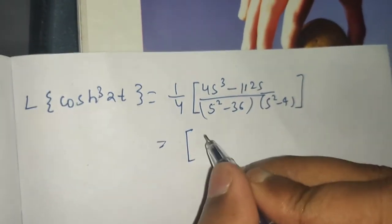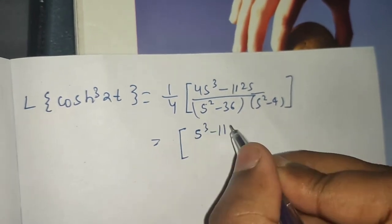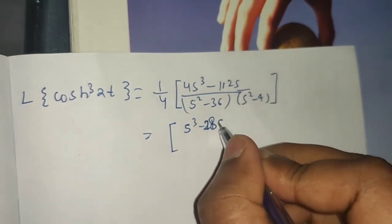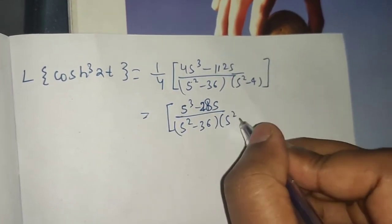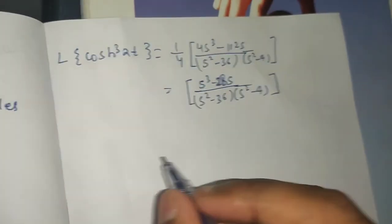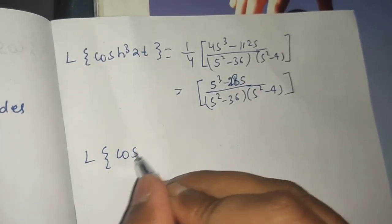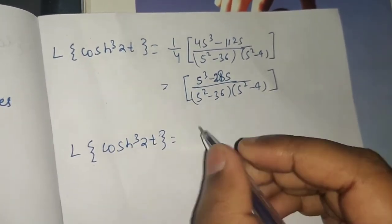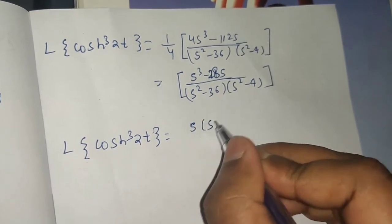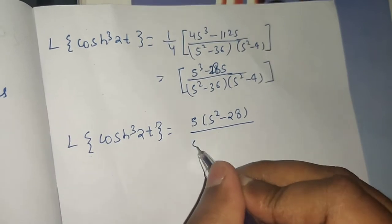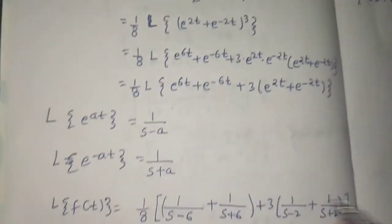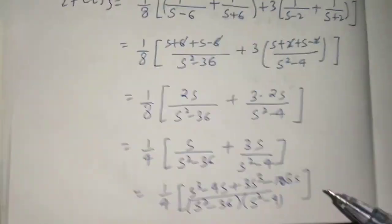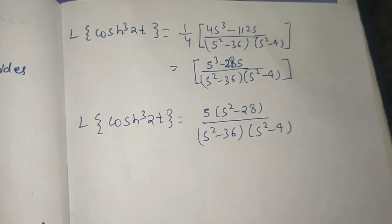Taking 4 out from the numerator, 4 by 4 gives 1, leaving s cubed minus 28s, since 112 divided by 4 is 28. The denominator is s squared minus 36 multiplied by s squared minus 4. So finally, the Laplace of cosh cube 2t equals s times (s squared minus 28) divided by (s squared minus 36)(s squared minus 4). This is the final answer, using the general definition and standard Laplace formulas.